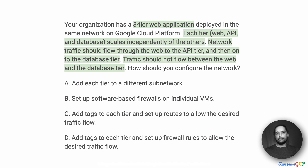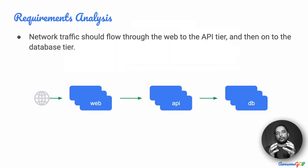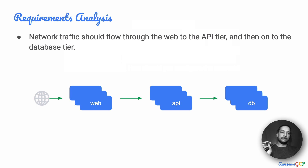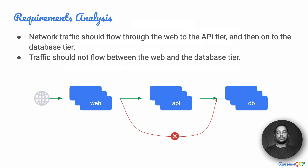There are a few key points here. We've got a multi-tier application — web, API and database are the three tiers, and they're going to independently scale. We want the traffic to flow only in one particular direction and of course back the same way. If we draw a picture of this, essentially we have a group of scaling VMs serving the web, another group serving the APIs and another group serving the DB. The traffic flow has to be from the outside internet through the web, through the API and finally to the DB and back. What we do not want is any traffic flowing between the web tier and the database tier.